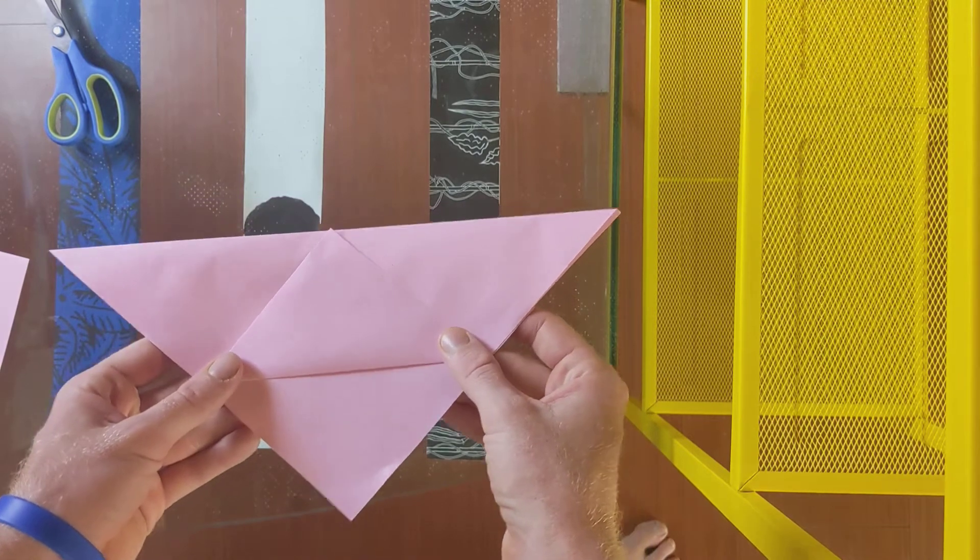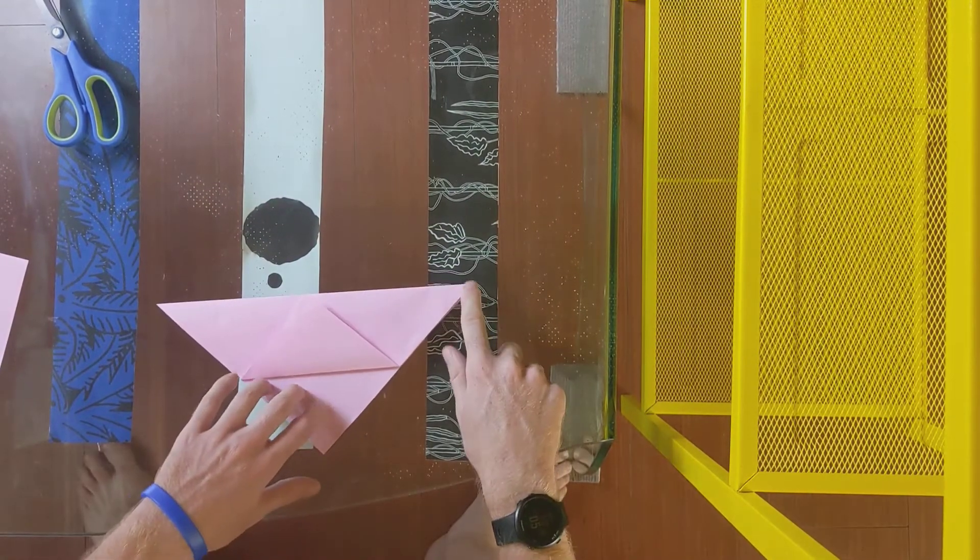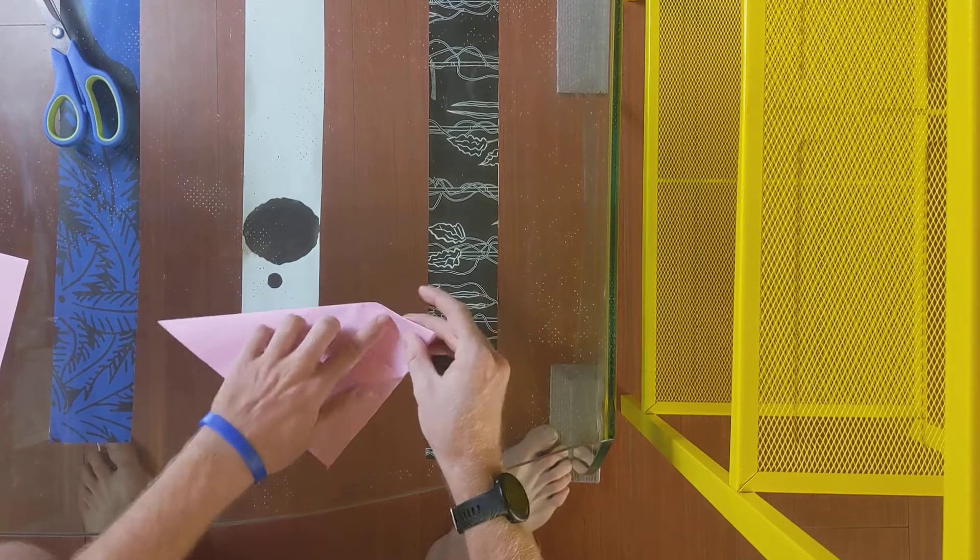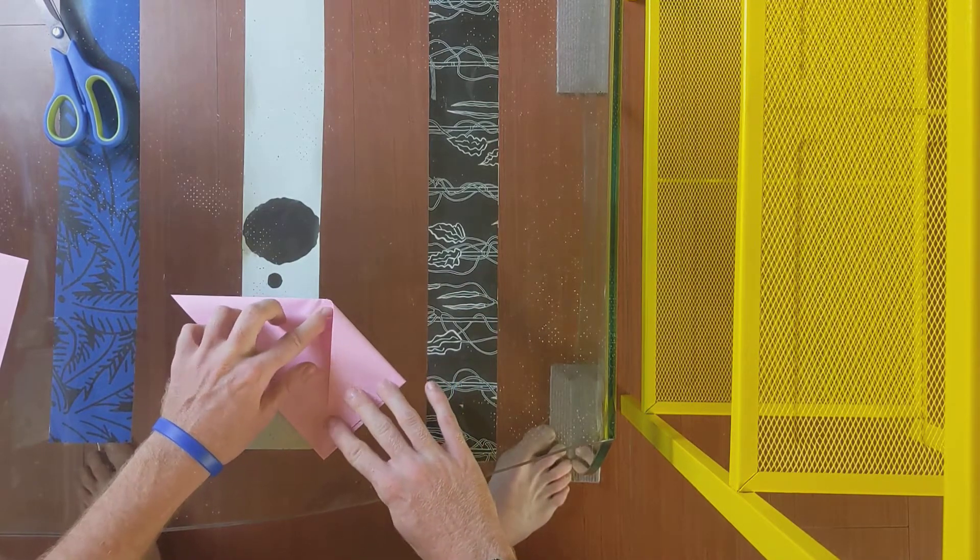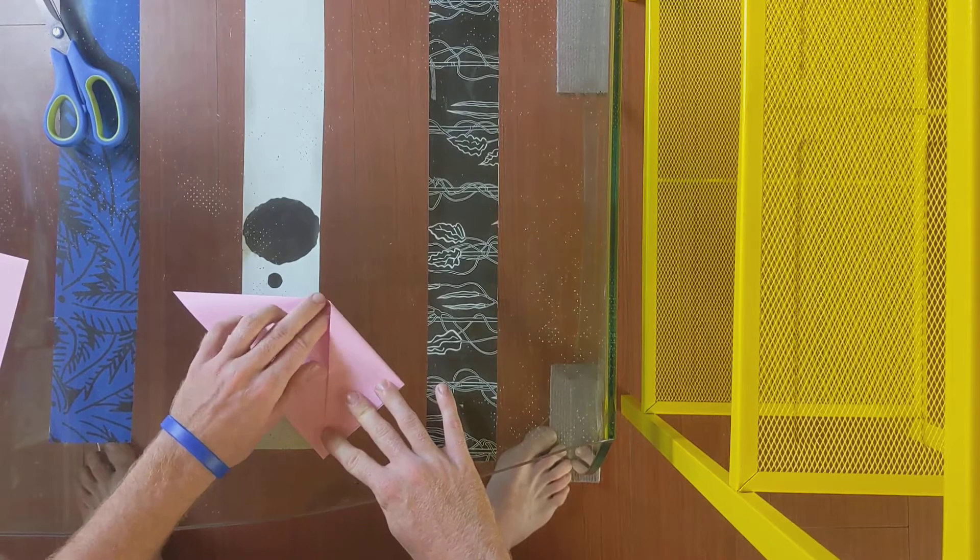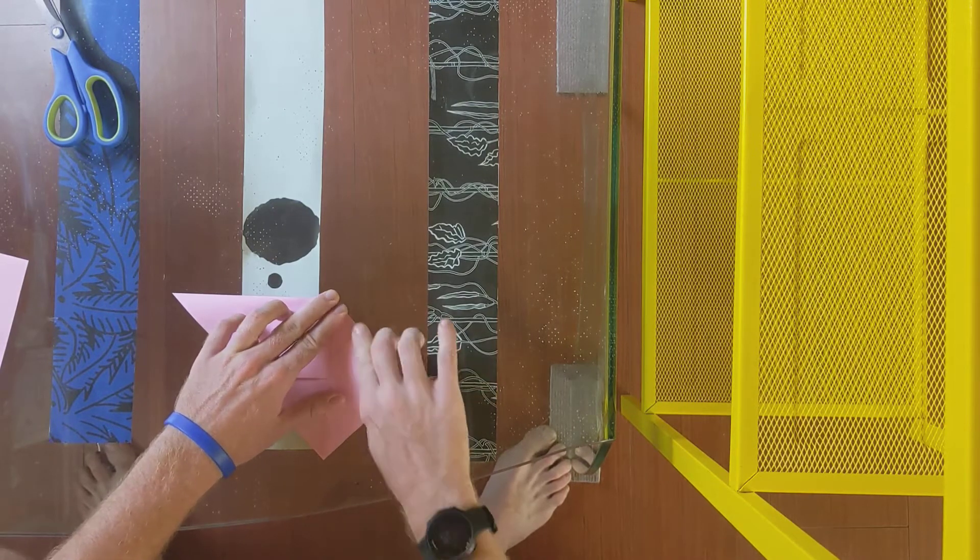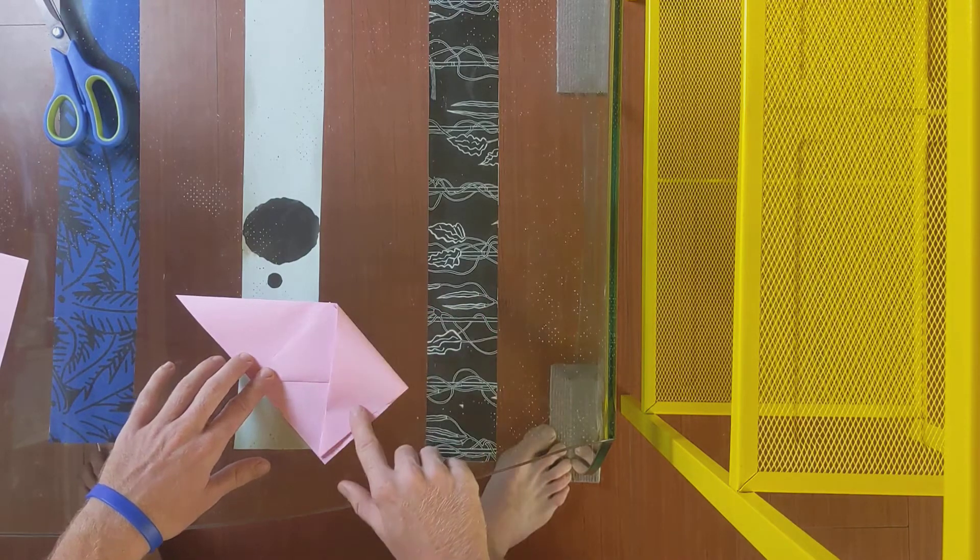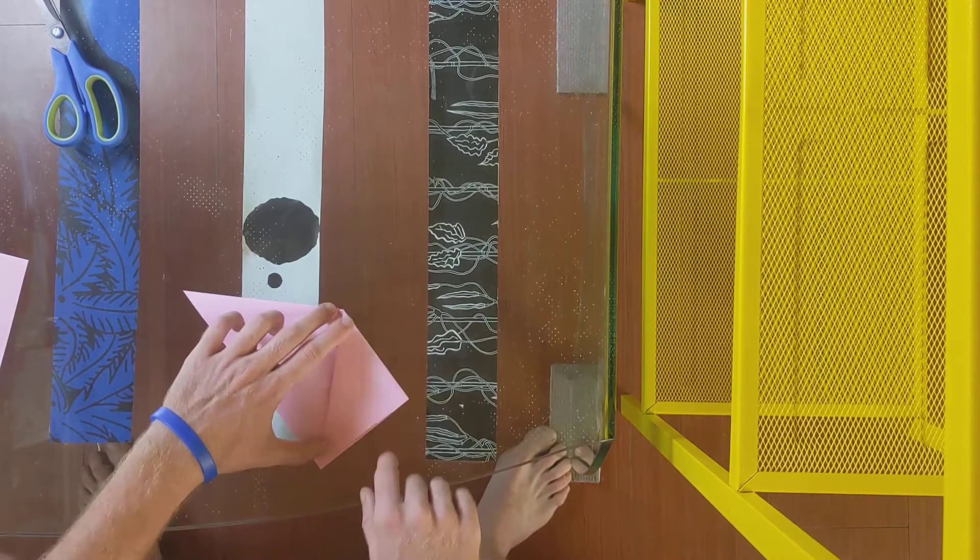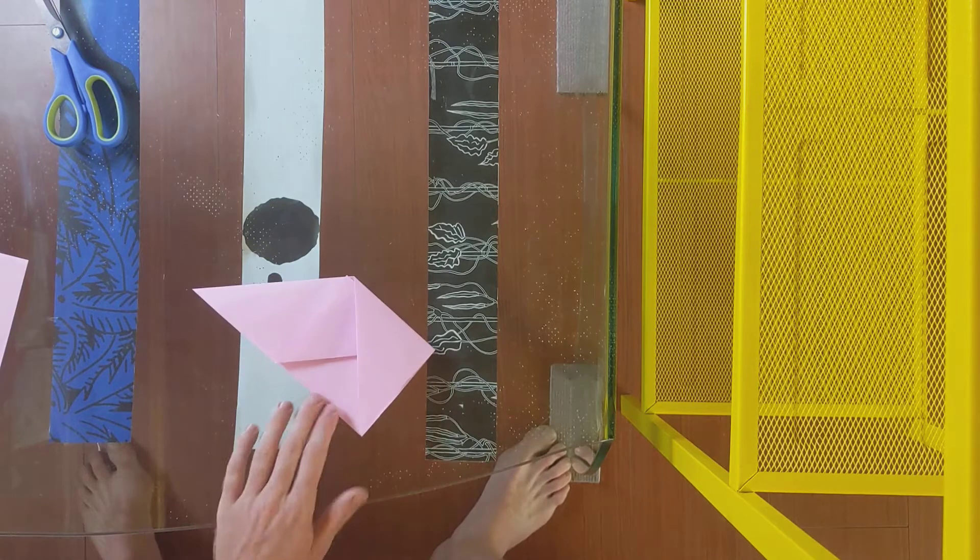Okay then the next thing you will do is take the top right corner and you'll fold it all the way to the bottom of the paper like this. Take the top right corner and fold it all the way to the bottom like this. So now your paper should look like this.